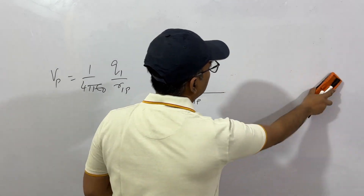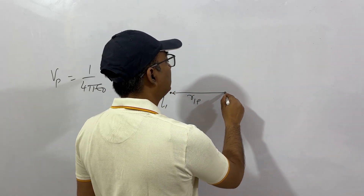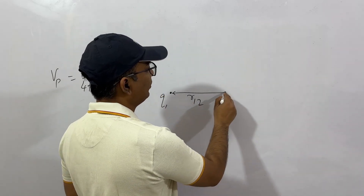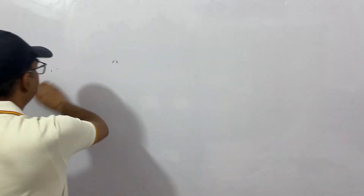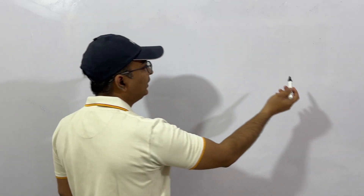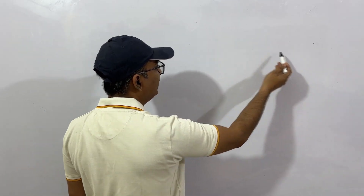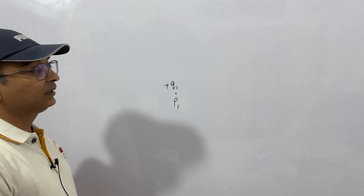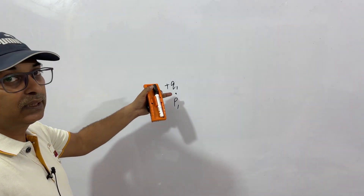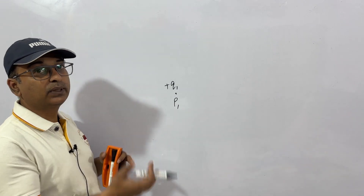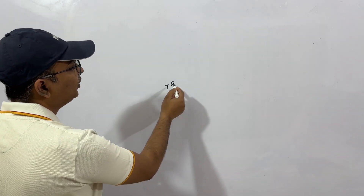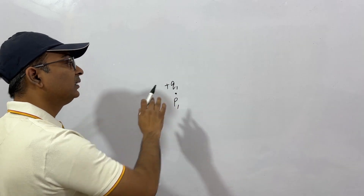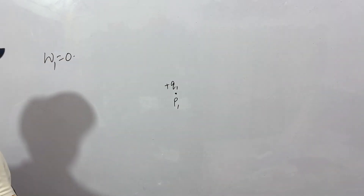Now let's dig deeper. We have another charge q2. Let's start afresh — we don't have any electric field. We bring a charge q1 from infinity to a point P1. What is the work done? Zero. Why? Because there was no electric field, there was no force to oppose or attract, so bringing q1 to a place in space where there is no electric field — the work done is zero.